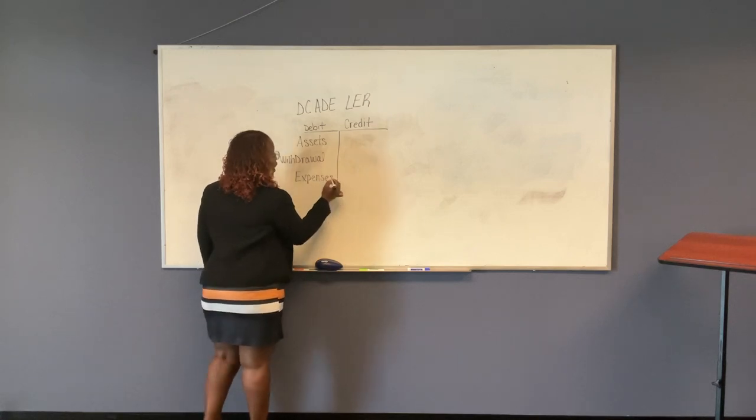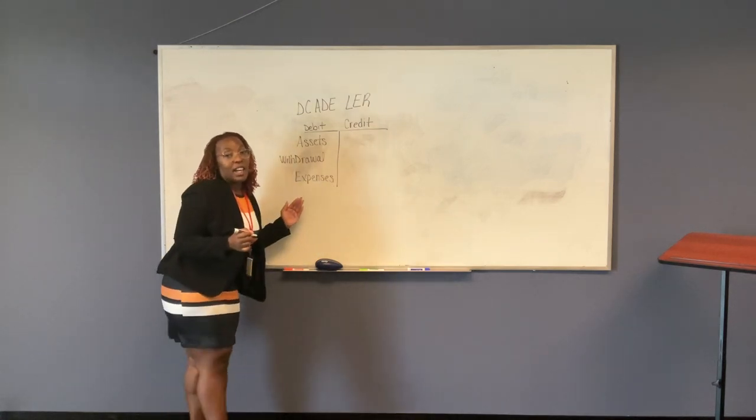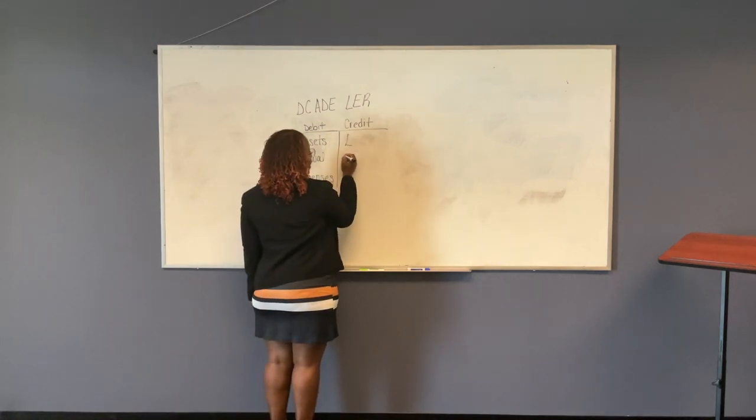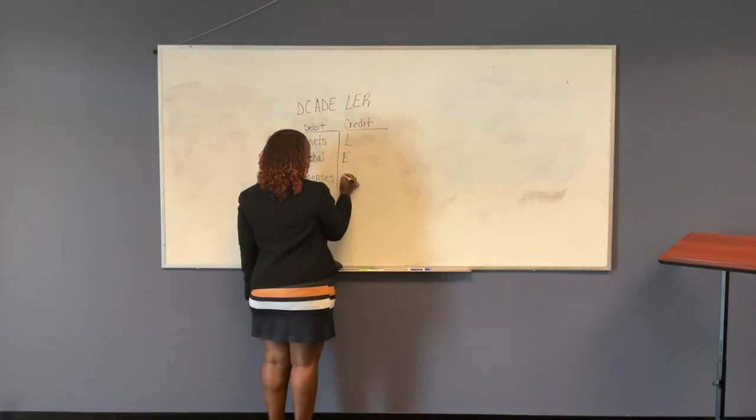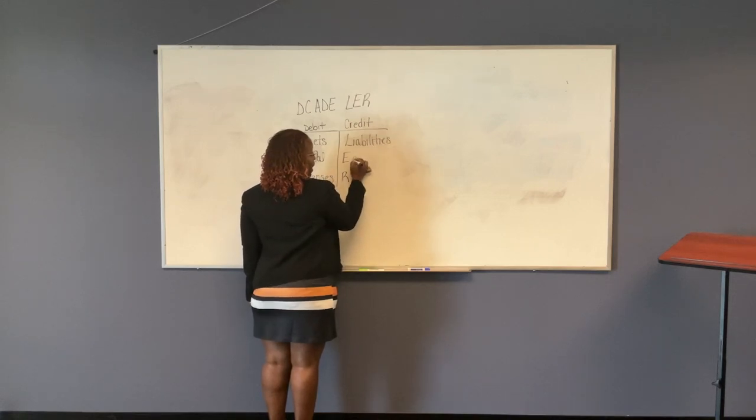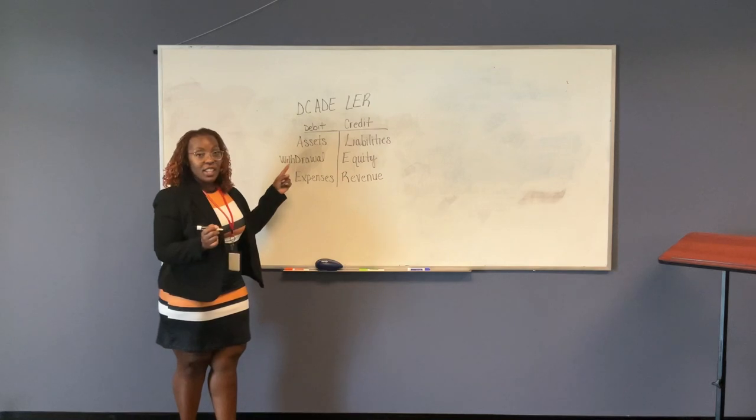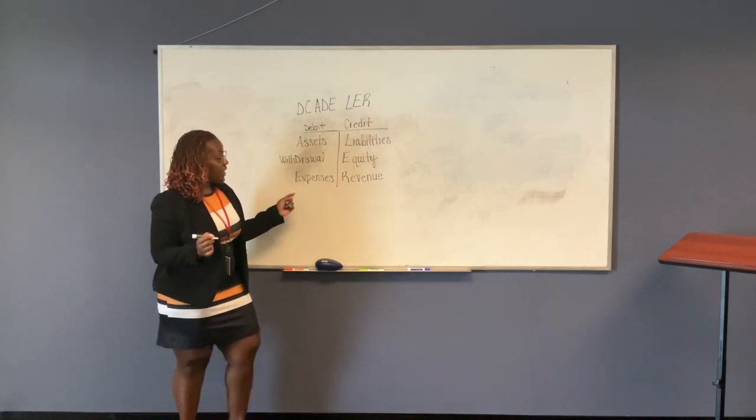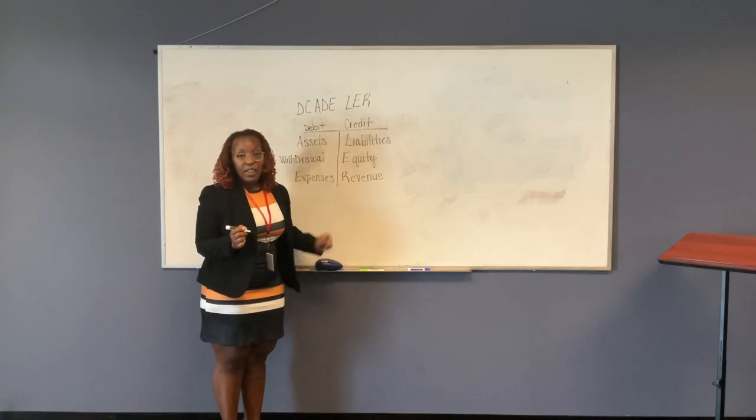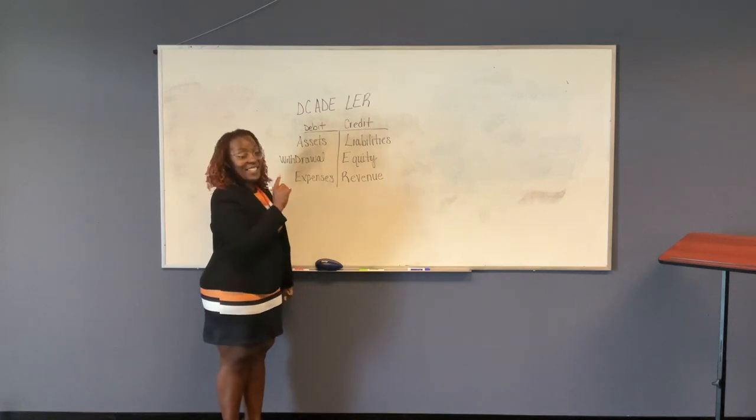All of these, the normal side is the debit side. Then we have LERN. Liabilities. Equity. And revenue. So you have assets, withdrawal, expenses, liabilities, equity, and revenue. D.C.A. Dorn. These are your normal balances.